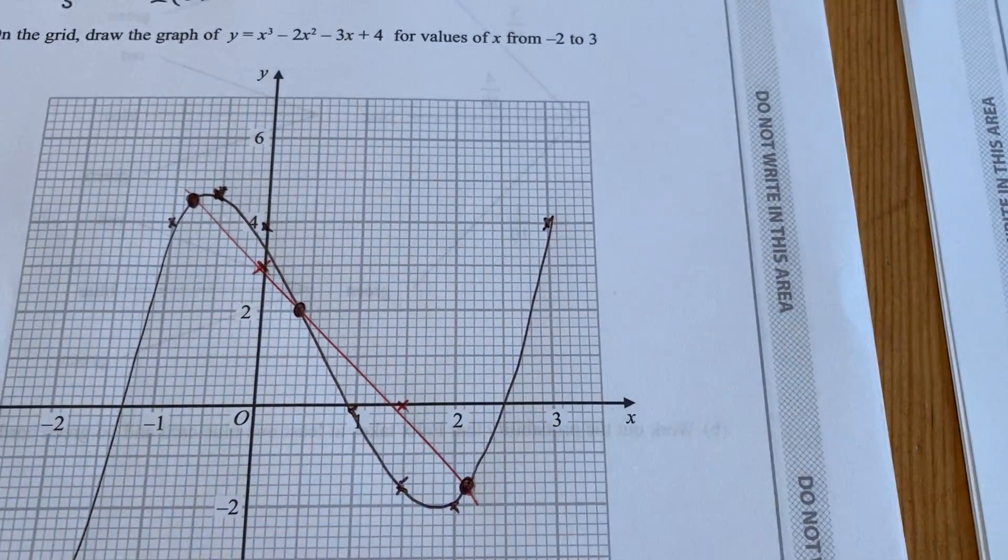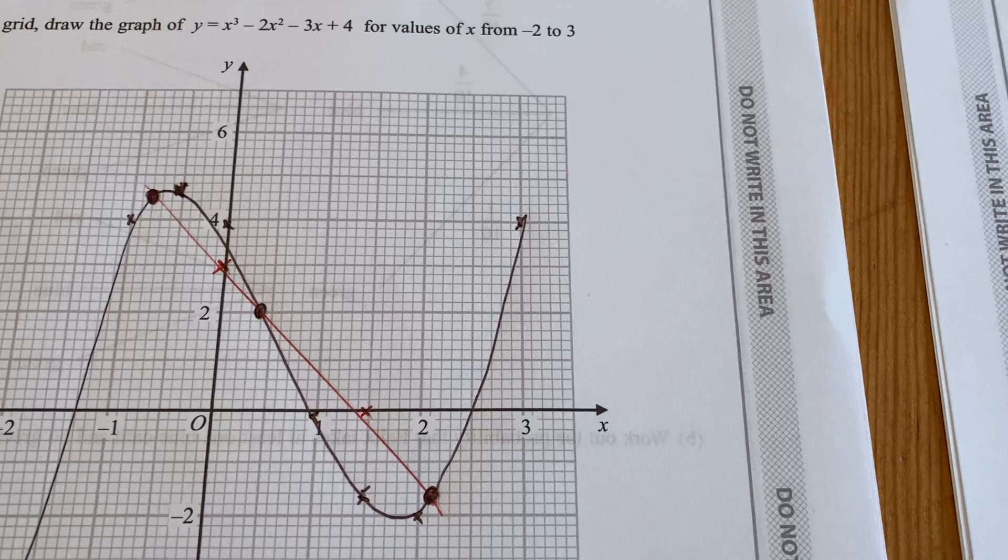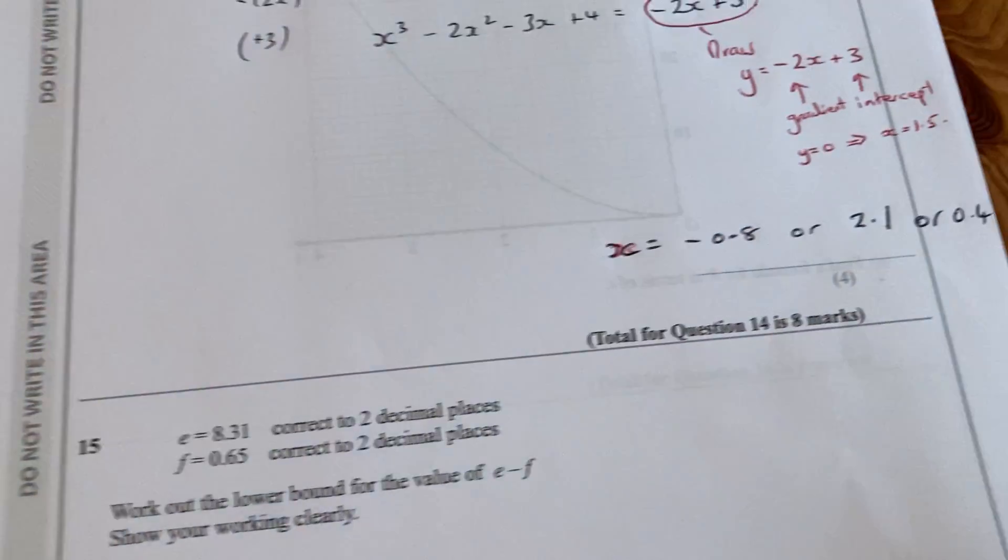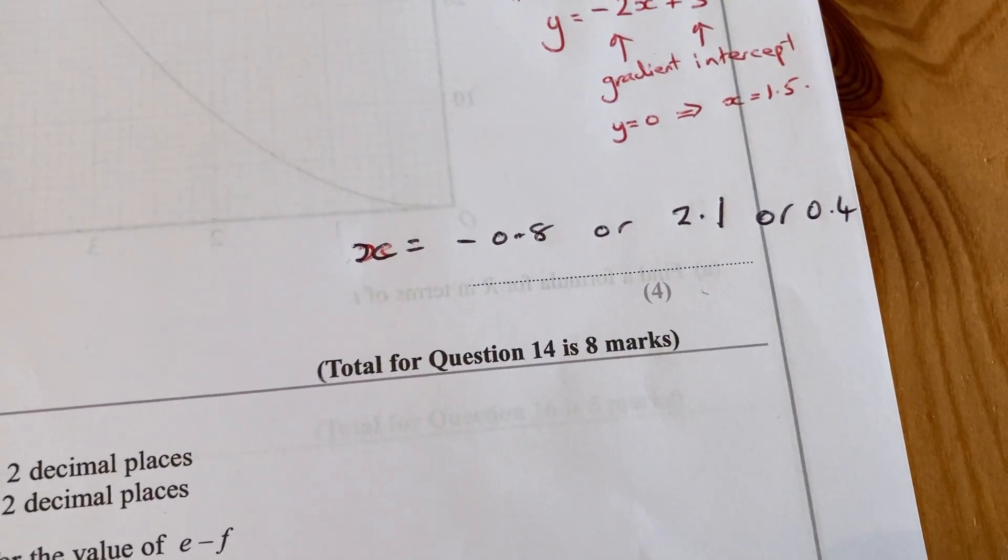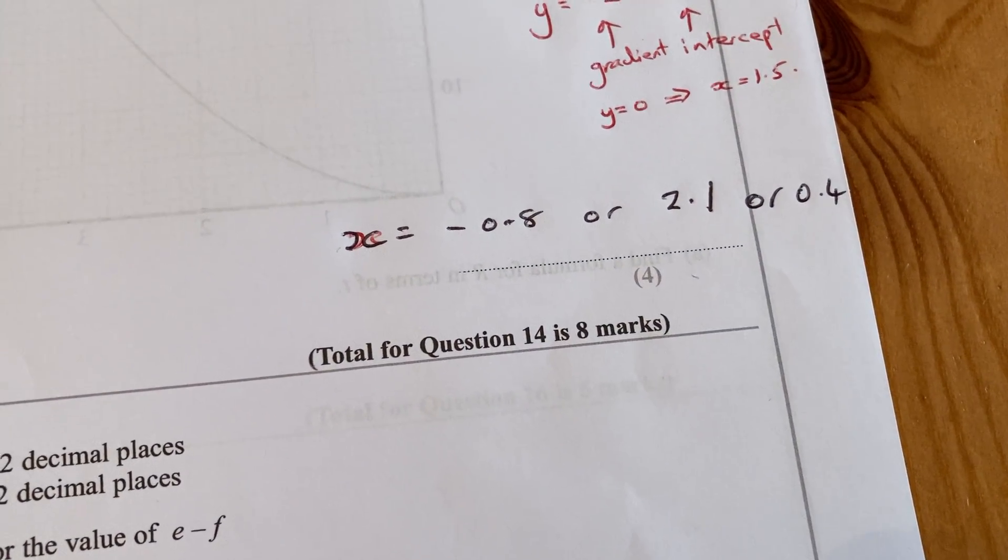You're allowed maybe about 0.2 either way in your answer as an allowance. So I've got my answer as -0.8, 2.1, or 0.4.